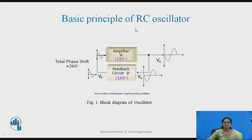RC oscillators are audio oscillators which provide an output frequency in the range of 20 Hz to 20 kHz. There are two types of RC oscillators: the RC phase shift oscillator and the Wien bridge oscillator. In this lecture, we will see the RC phase shift oscillator circuit.